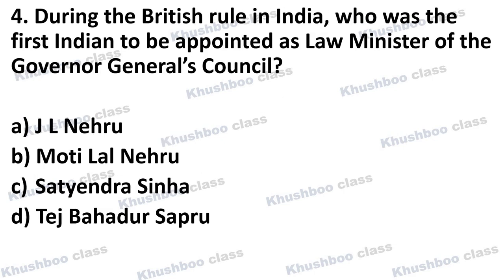Next question: During British rule in India, who was the first Indian to be appointed as Law Minister of the Governor General's Council? The last question asked about independent India's first Law Minister; this question asks about the first Law Minister of the Governor General's Council during British rule. Option A is Jawaharlal Nehru, Option B is Motilal Nehru, Option C is Satyendra Sinha, Option D is Tej Bahadur Sapru. The answer is Option C, Satyendra Sinha. Do not get confused between the two: Satyendra Sinha was the first Law Minister of the Governor General's Council, while Dr. B.R. Ambedkar was independent India's first Law Minister.